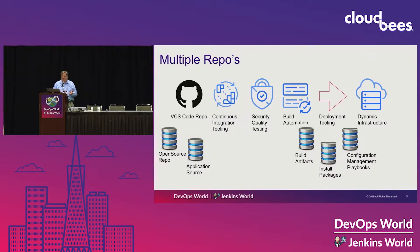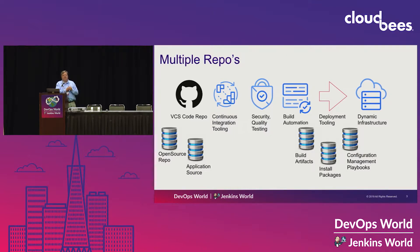You've got your application source. Once you've gone through your build automation, you've got your build artifacts. Those build artifacts in raw form may be put into a package registry format depending on the language you're using and the type of package installer that you're using.